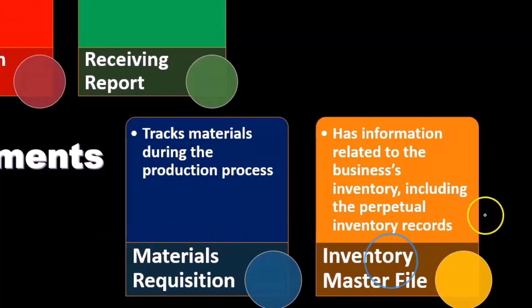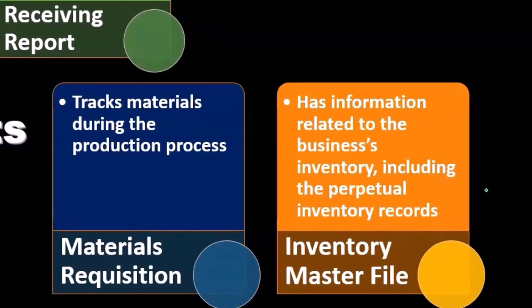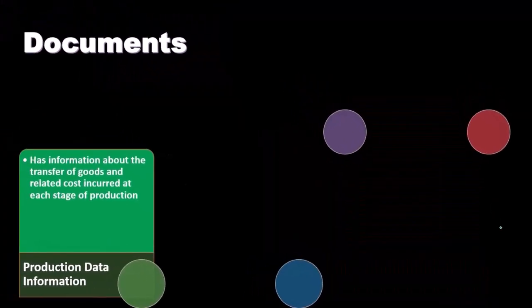The inventory master file has information related to the business's inventory, including the perpetual inventory records. This gives us a subsidiary-ledger-type detail — similar to what we might think of with accounts receivable and accounts payable — providing the detail we're going to need with regards to inventory.